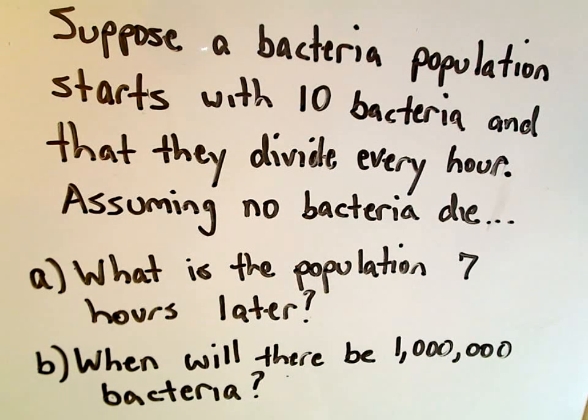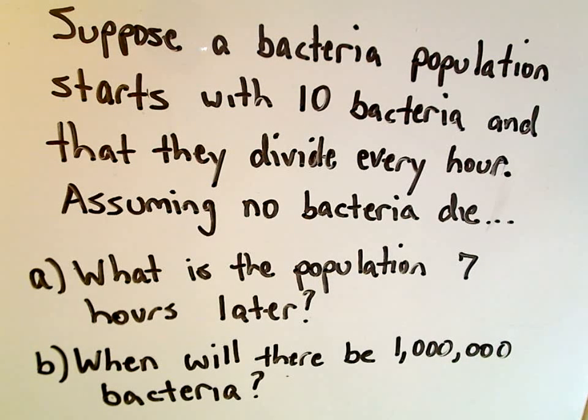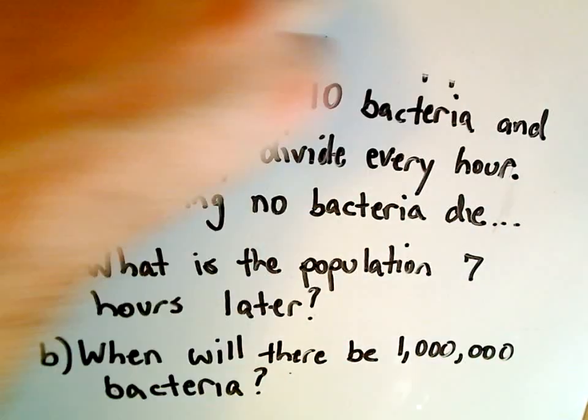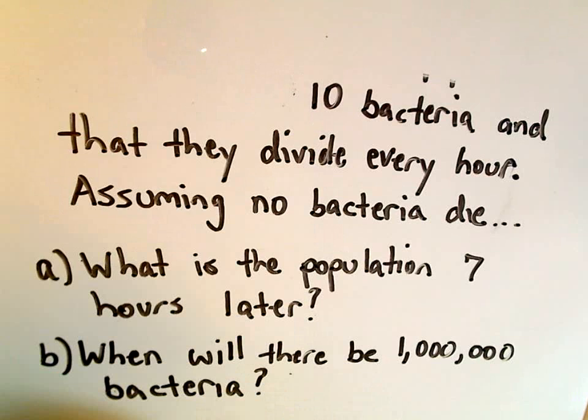Assuming no bacteria die we want to figure out two things: part a will figure out what's the population seven hours later, and we would like to know when there's going to be a million bacteria. You know this is a reasonable problem. Maybe this particular type does, maybe there's plenty of nutrients and so we can expect the population to get pretty big. So we say that our bacteria population, we start with 10 bacteria.